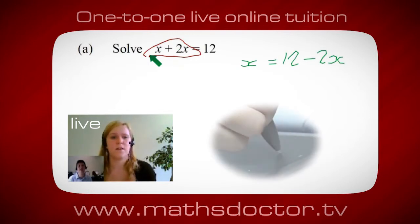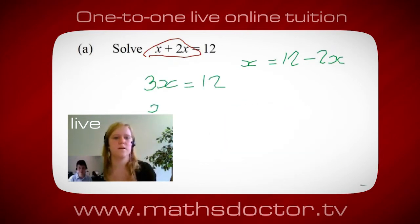Oh, okay, it's 3x isn't it? Yeah, absolutely. So 3x equals 12, and so x equals 4. Brilliant, spot on, well done.